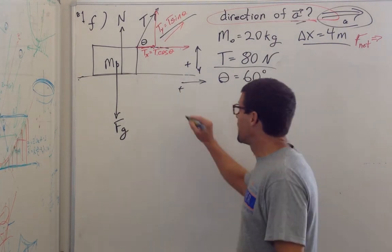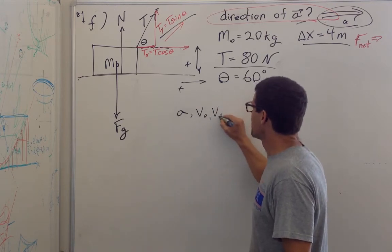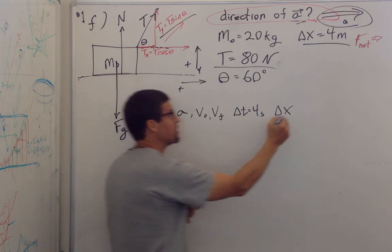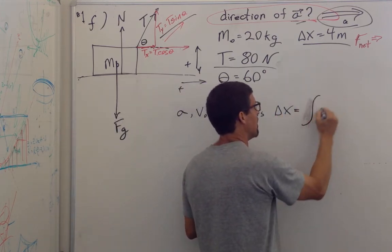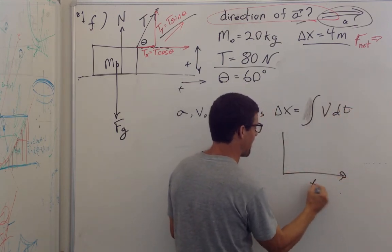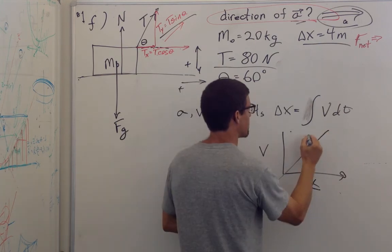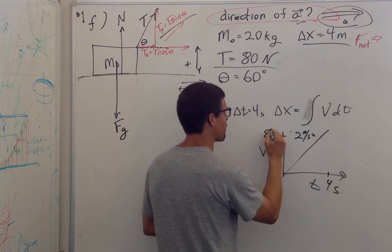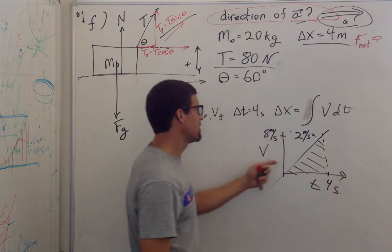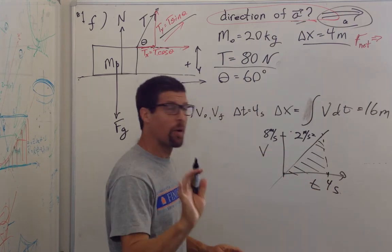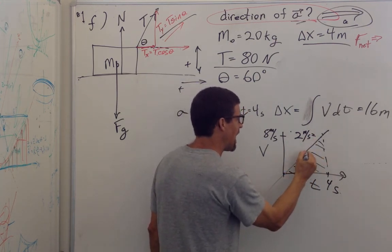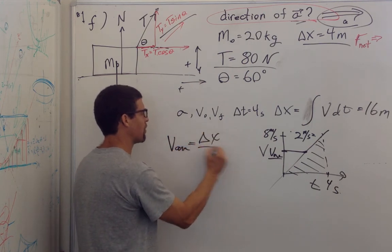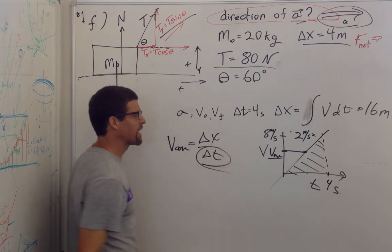1F is a kinematics problem because I know the acceleration, v-naught, v-final, and the time, and I want to find delta x. The displacement is the integral of velocity dt — the area underneath the velocity-time graph. It has a slope of 2 meters per second squared, I pull for 4 seconds, and at the end I'm moving at 8 meters per second. The area is 4 seconds times 8 meters per second times one half, or equivalently, the average velocity is 4 meters per second, so 4 times 4 seconds gives 16 meters.